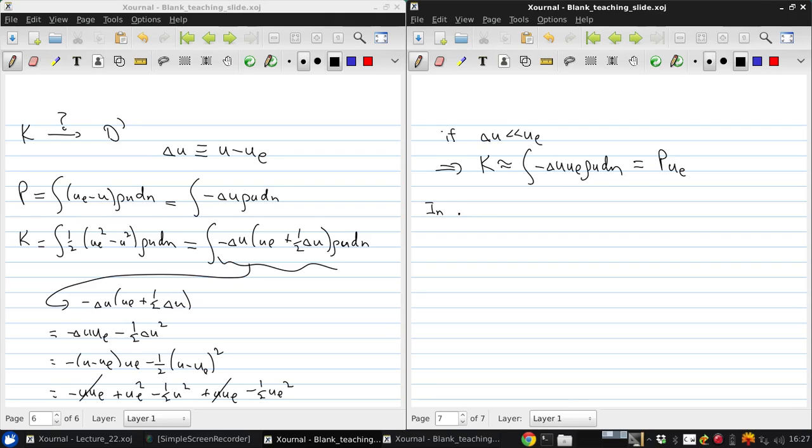So, in far away, UE also tends towards V infinity. And so we get that K infinity, so K in the far away from the airfoil is equal to P infinity times V infinity.